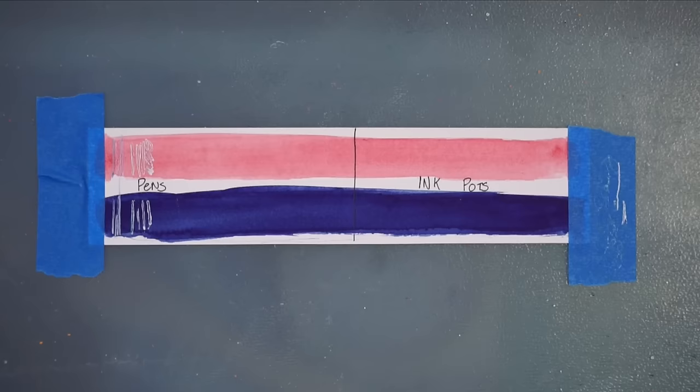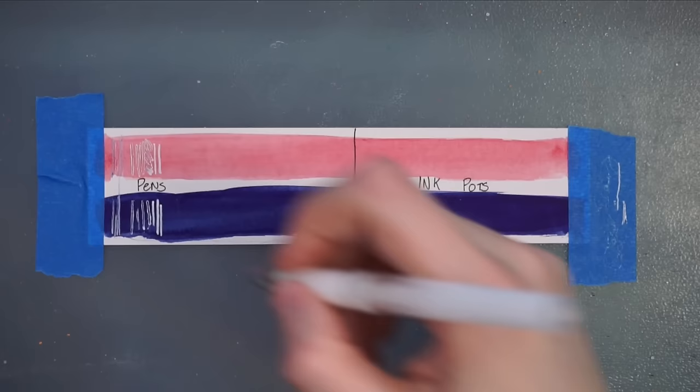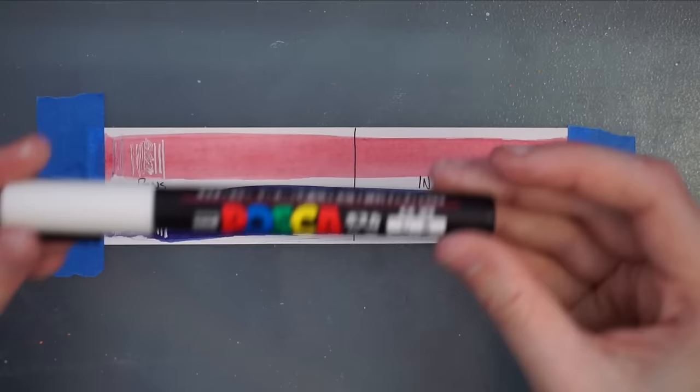Next is the Uniball Signo. As you can see, there are a few extra swatches on the watercolor. That was because I actually decided to switch these Uniball pens. The one I was using was on its last legs and running out, so I switched to a new one to give you a better example of what the pen was like.